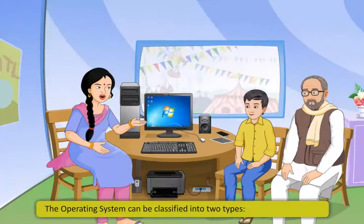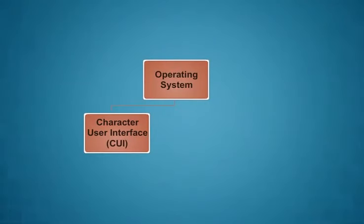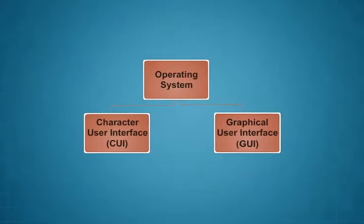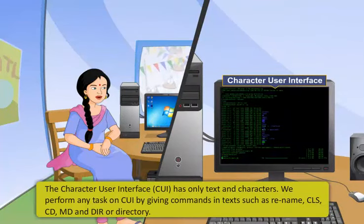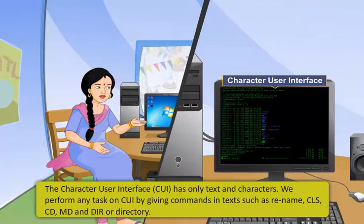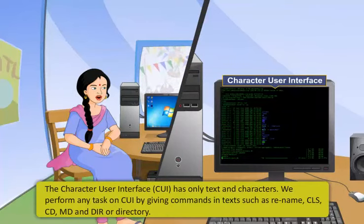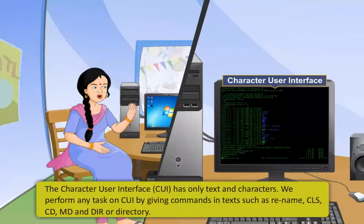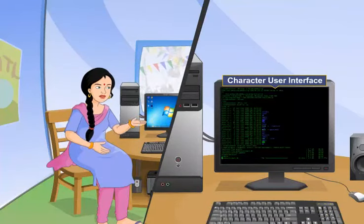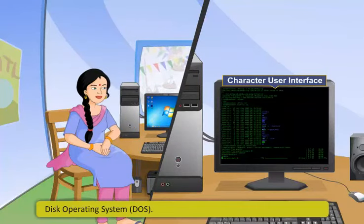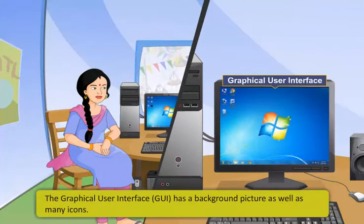The operating system can be classified into two types: Character User Interface (CUI) and Graphical User Interface (GUI). Character User Interface does not have any icons or images — it works using only text and characters. We can perform tasks on CUI by giving commands in text such as Rename, CLS, CD, MD, and DIR or directory. An example of CUI is the Disk Operating System.